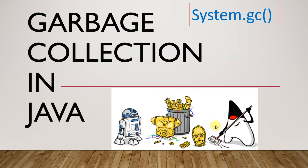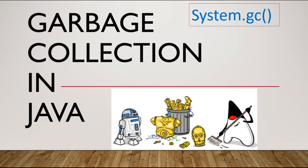Good morning friends, welcome back to my channel. In today's video we are going to see what is garbage collection in Java. In brief, garbage collection is a process which runs in the background in any Java process. The job of garbage collection is to automatically determine which memory is in use and which is not in use, and free up the memory for further processes.